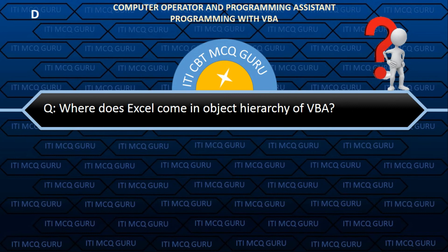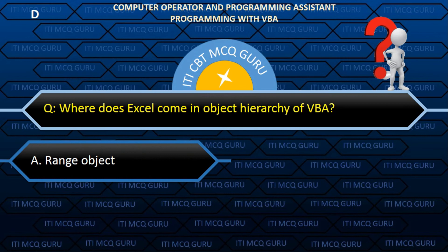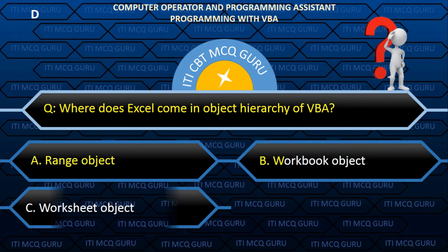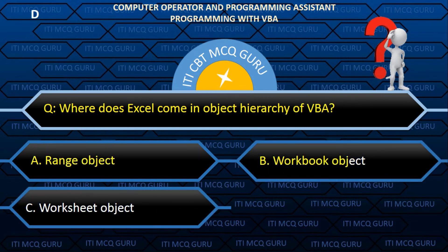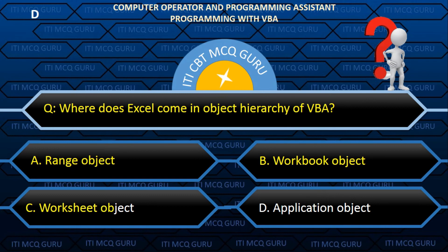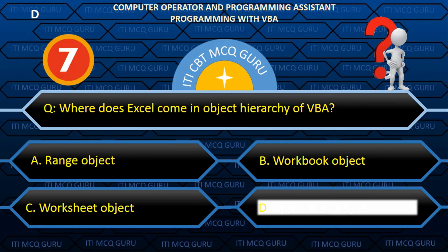Where does Excel come in the object hierarchy of VBA? Answer: D. Application object.